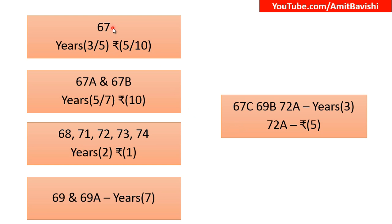After 66 comes 67, and 67 also has sub-sections 67A, B and C. Section 67 is about obscene content. A is for adult, B for Baccha (children), and C was about the contract list regarding preservation and retention of information by an intermediary. Then 68 is the controller. Section 69 is about information — not just interception but information, access and security. So 69 is about information, 69A is for access, and 69B is for security, specifically cyber security by monitoring and collecting traffic data. Then 70 and its sub-sections: 70 was for the protective system, 70A for the national nodal agency, and 70B was for the response team.